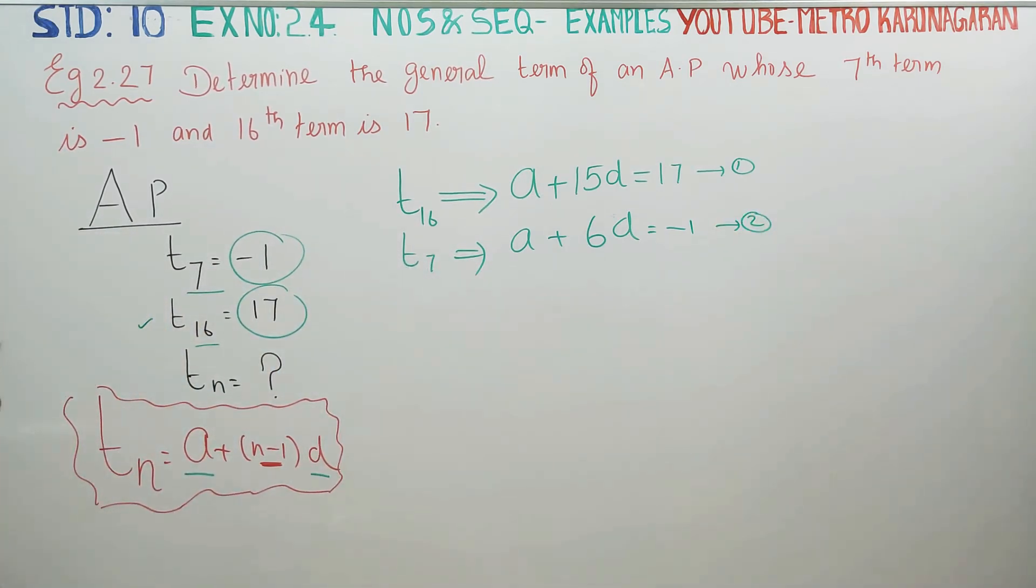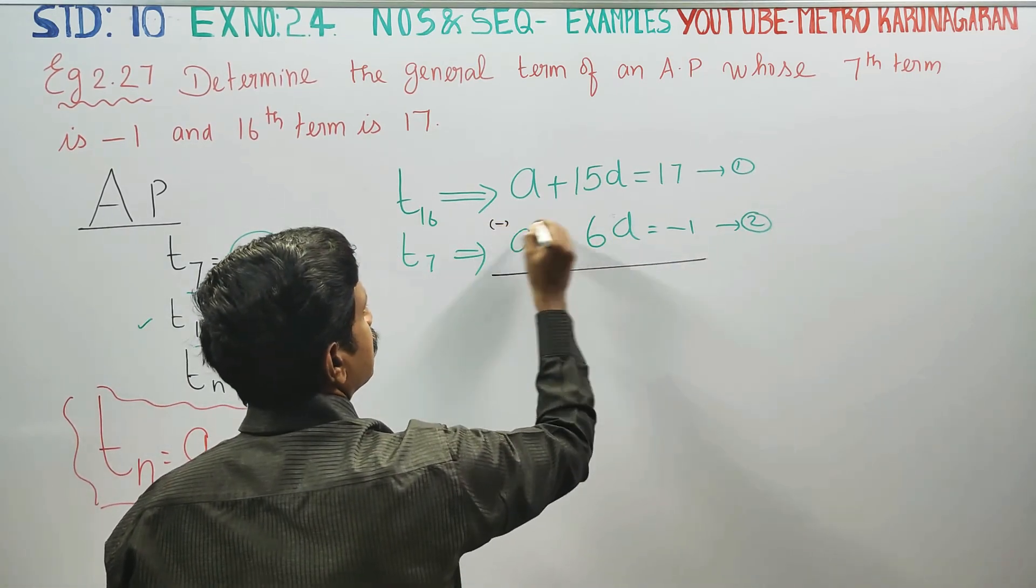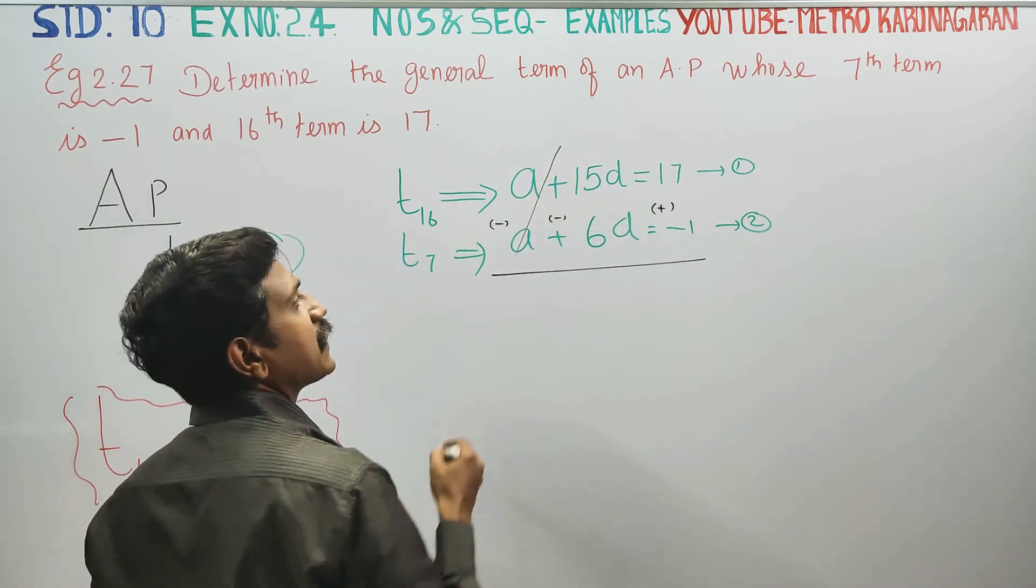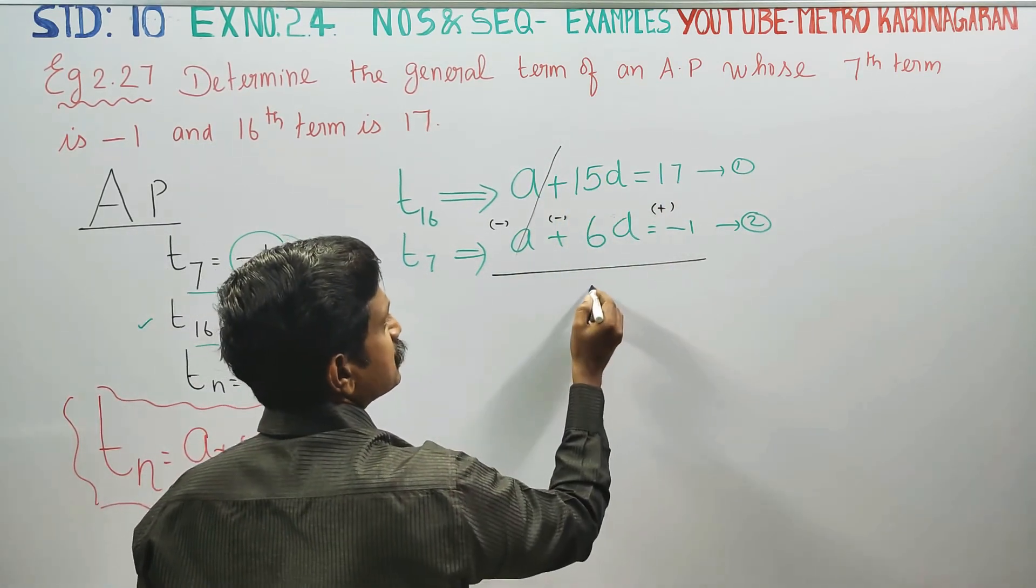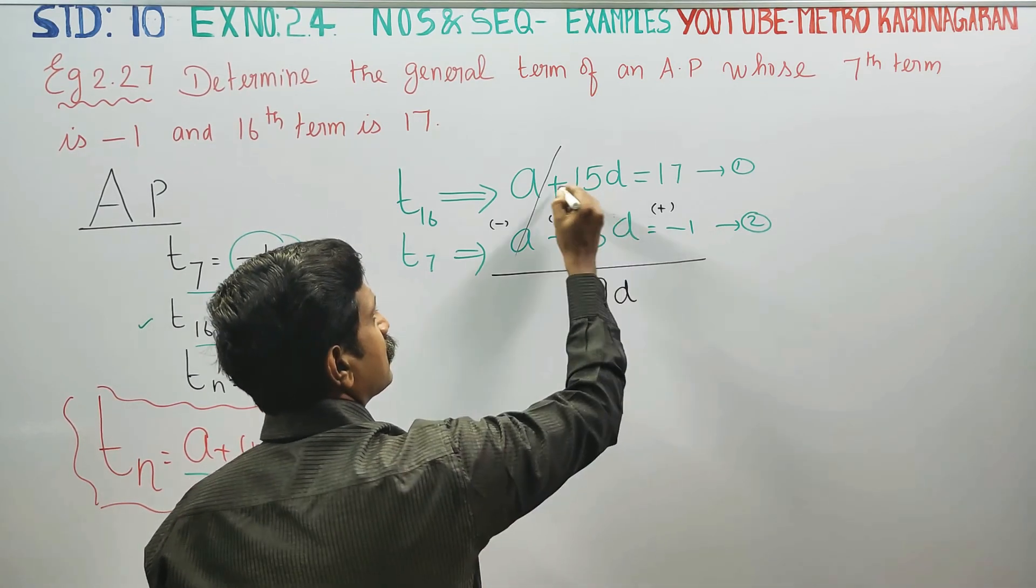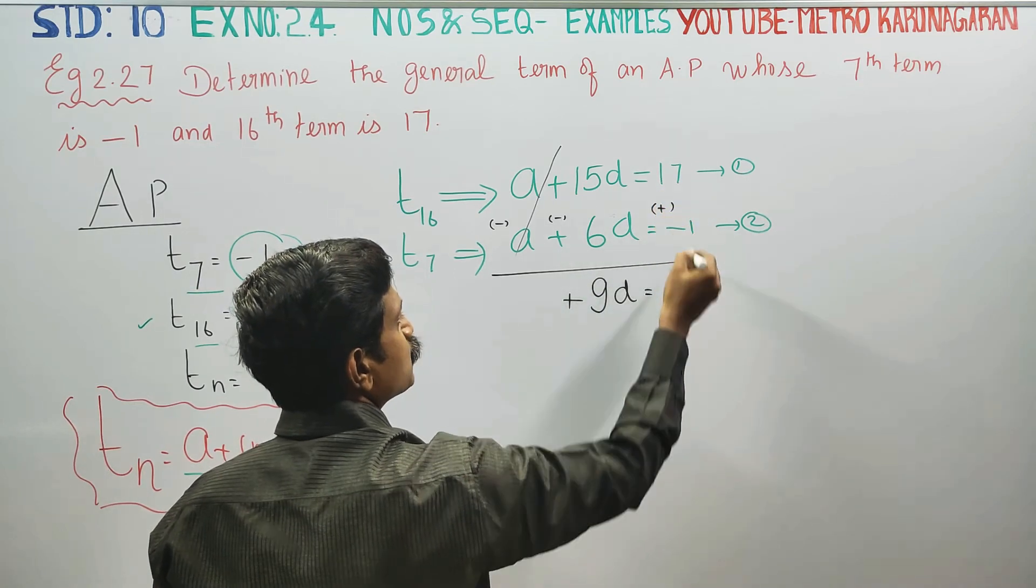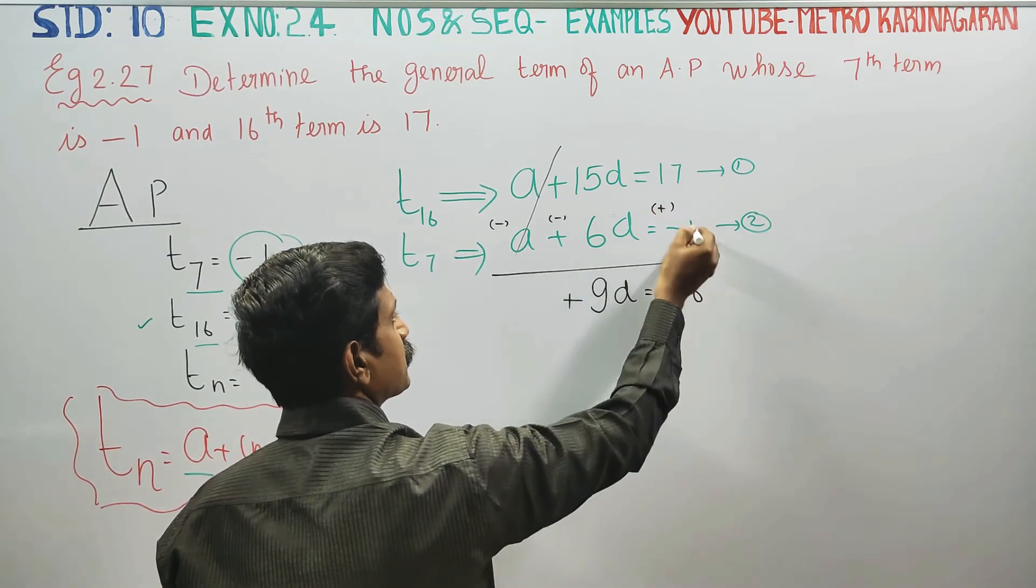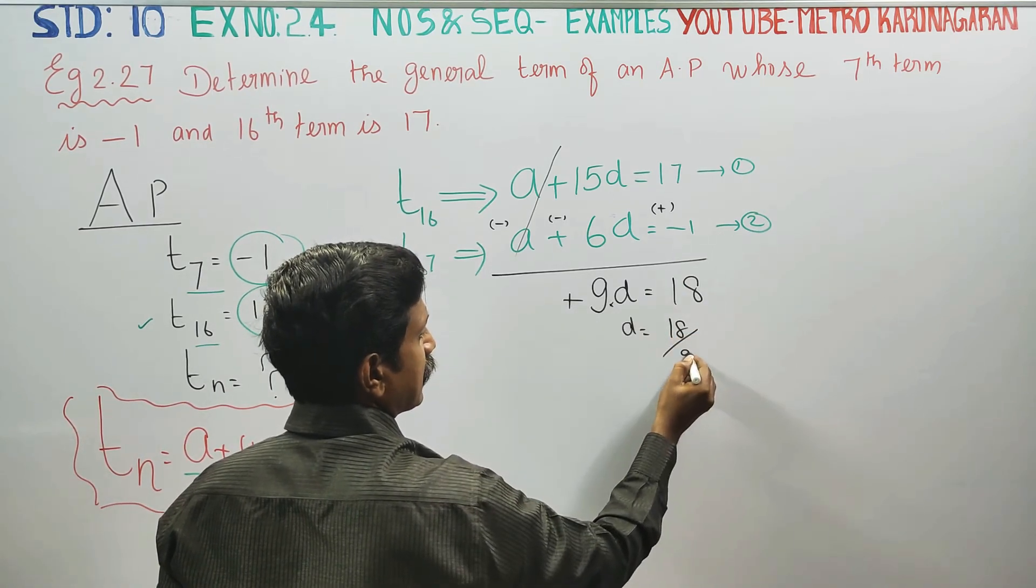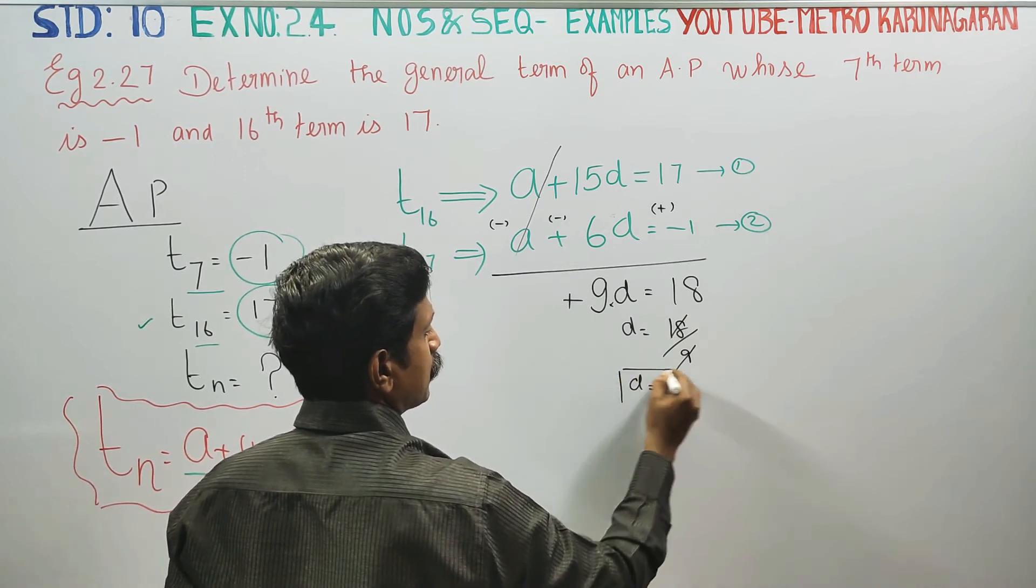Two equations ready, subtract. Same symbol cancels. 15D minus 6D, 17 plus 1 is 18. 9D equals 18, D equals 2. Common difference is 2.